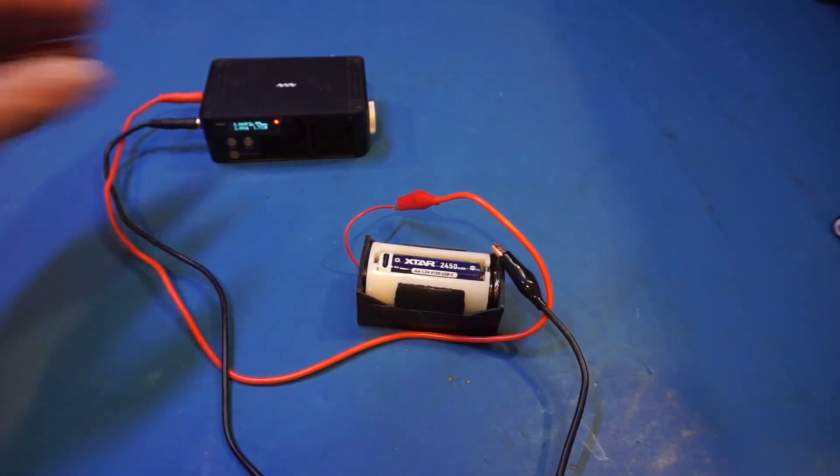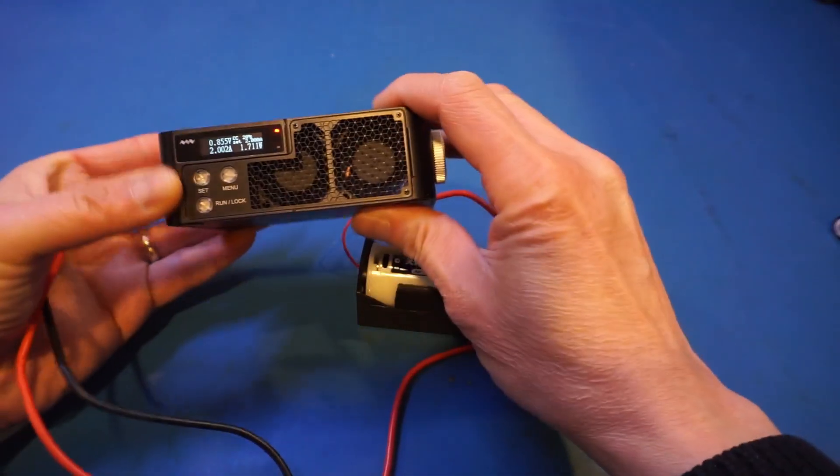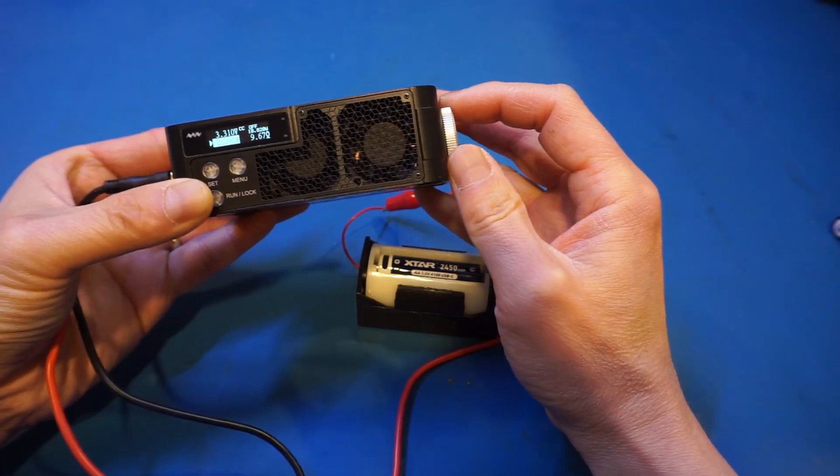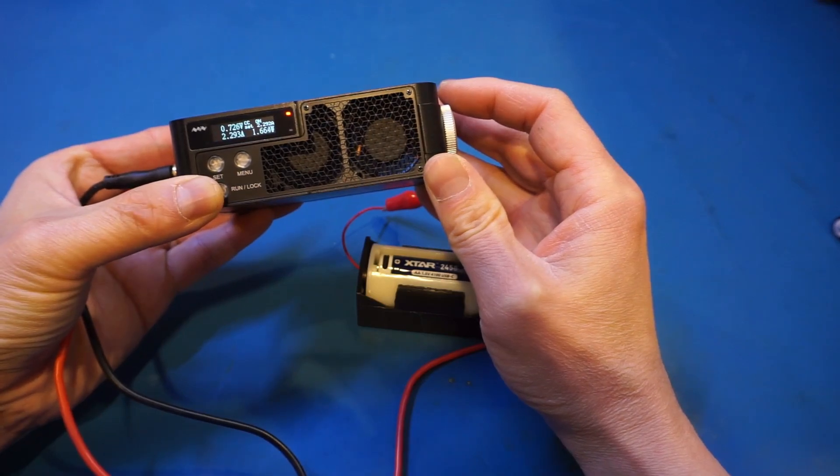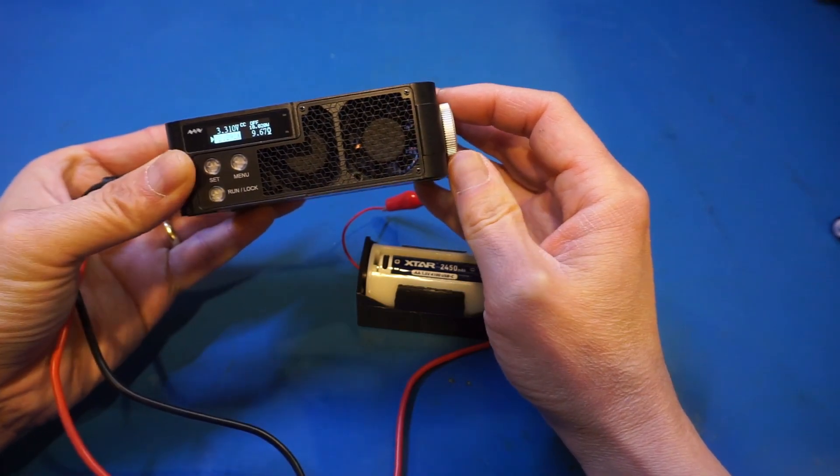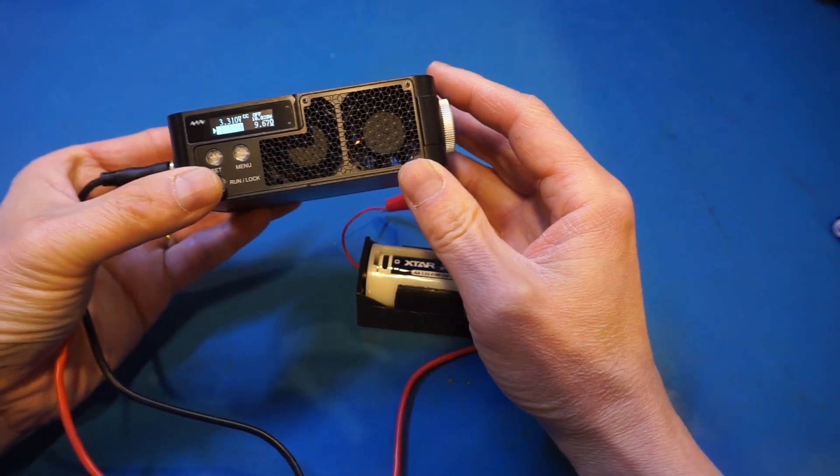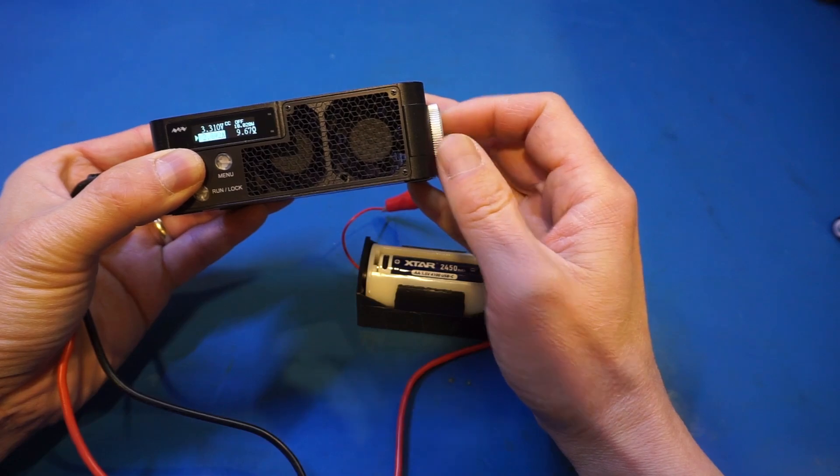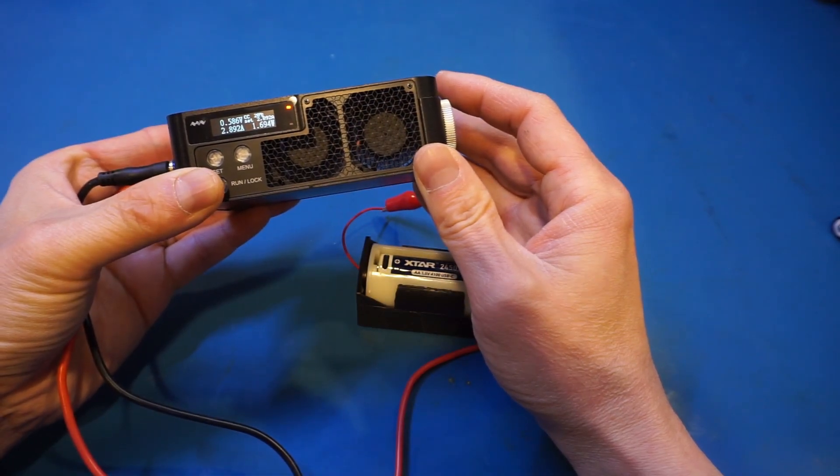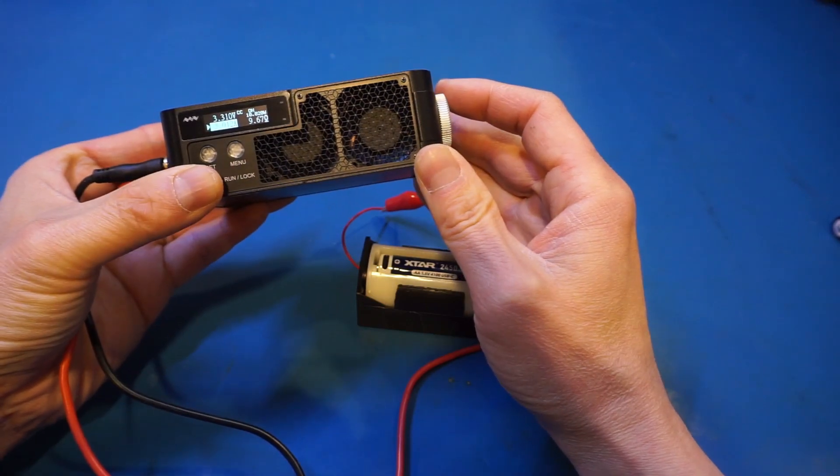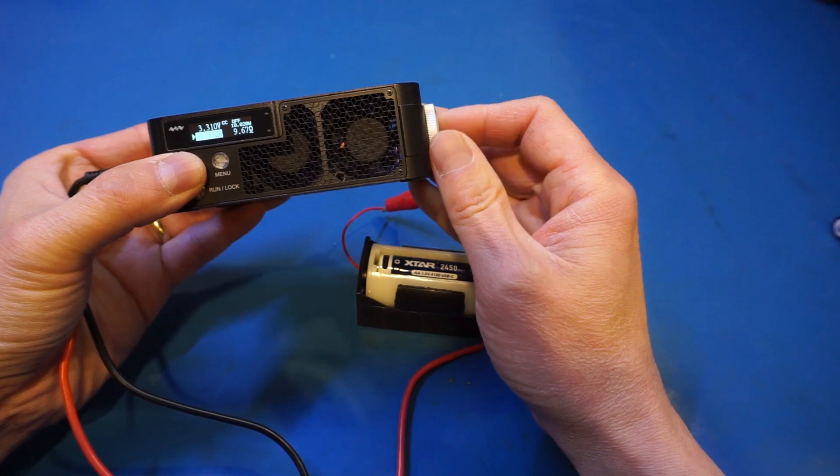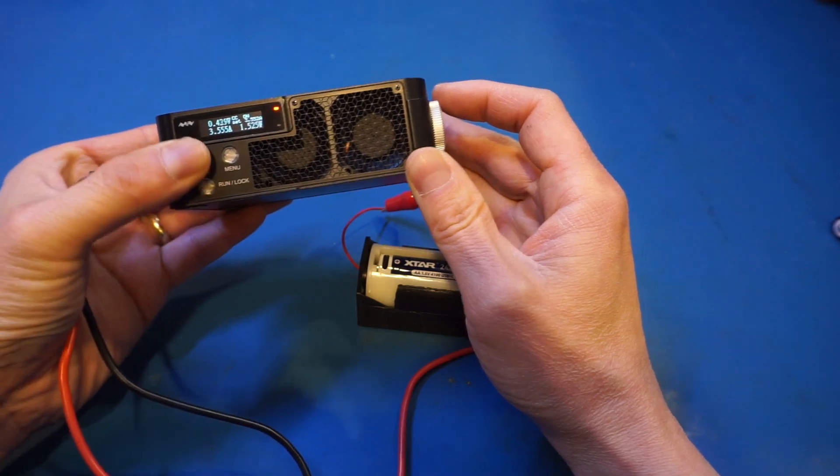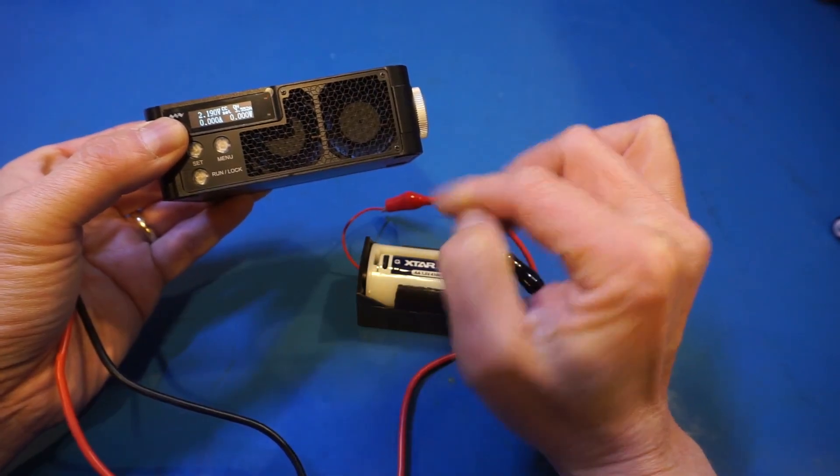Now let me increase the load current even higher to see at what point it will cut off. Let's turn it off first and let's increase the current. Let's do 2.29. We can still handle that. Let's do 2.5, close enough. Seems to be able to handle that just fine. Let's do 2.8, 2.9. No problem. Let's do 3 amps. Still going. Let's do 3.5.